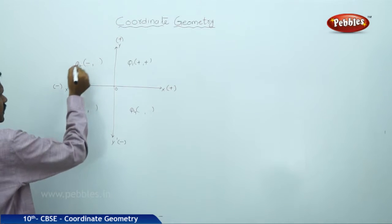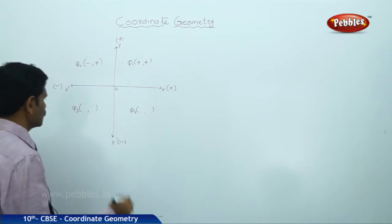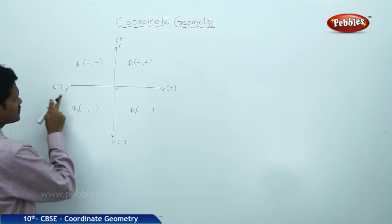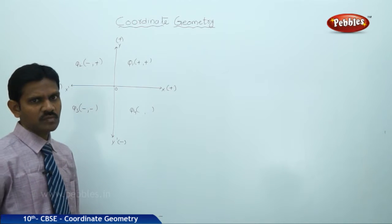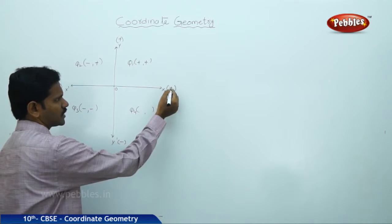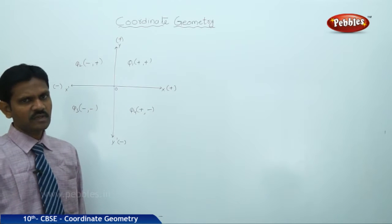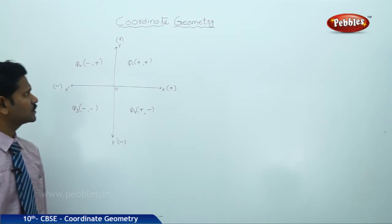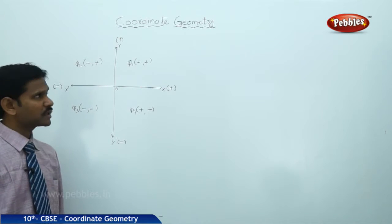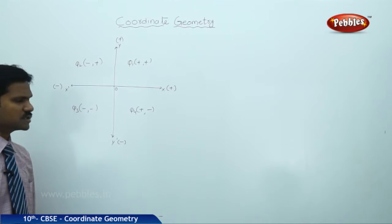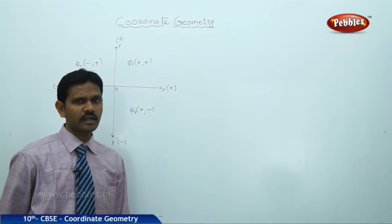In Q2, the x-coordinate is negative and the y-coordinate is positive — that is, minus, plus. The third quadrant has x negative and y also negative. In Q4, x is positive and y is negative. To summarize: Q1 is both positive, Q2 is negative and positive, Q3 is negative and negative, and Q4 is positive and negative.